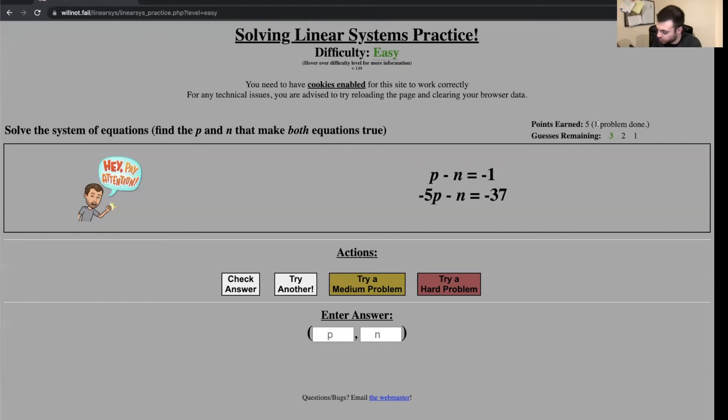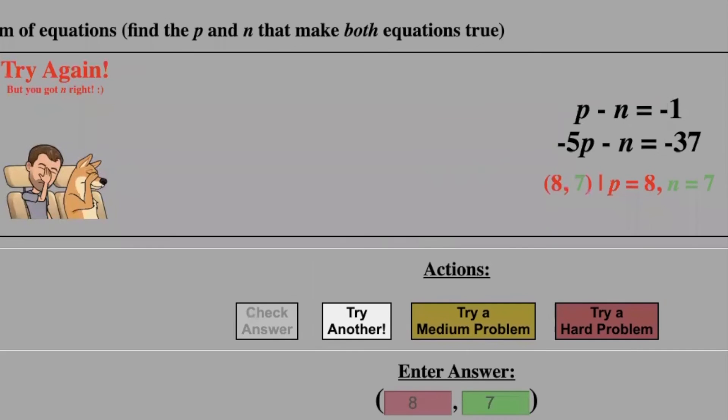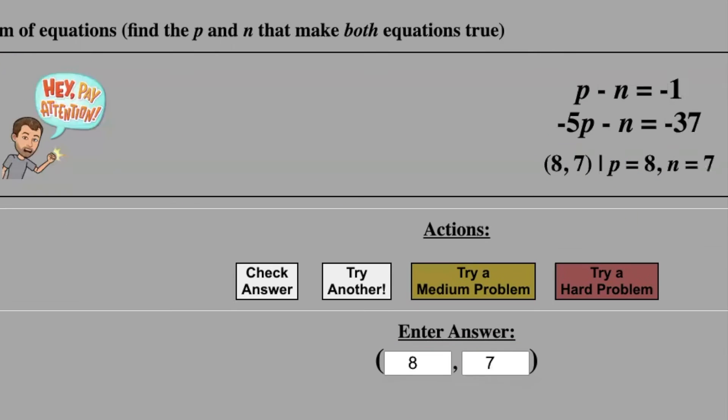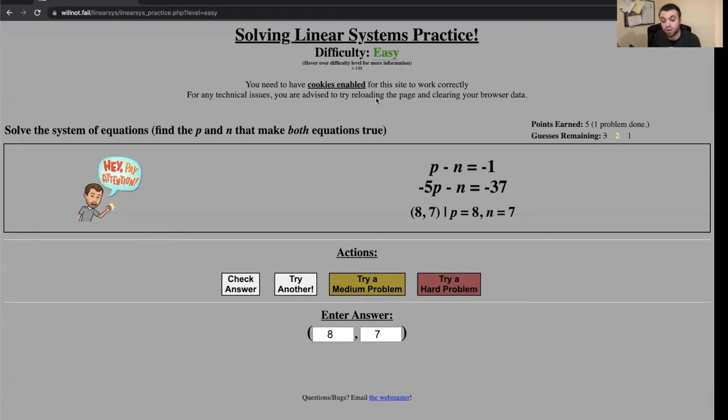I solve for n by subtracting 5—negative 37 minus 5—and then I divide both sides by negative 6. I made a mistake. Let's say that I accidentally add one, so instead of doing 7 minus 1 I do 7 plus 1 and I get p equals 8. It's going to indicate that one of the numbers is correct and the other number is not, so the 7 is right and the 8 is wrong.